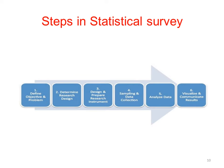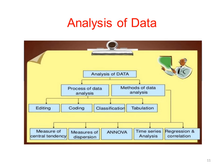Now we are going to look at the statistical survey process. The steps are: first, define the objective and problem; second, research design; third, design and prepare the research instrument; and fourth, samples and data collection.